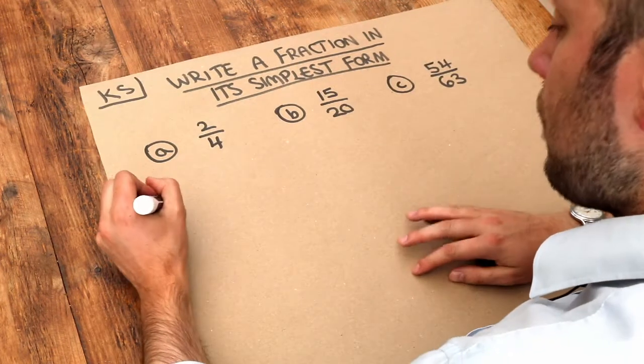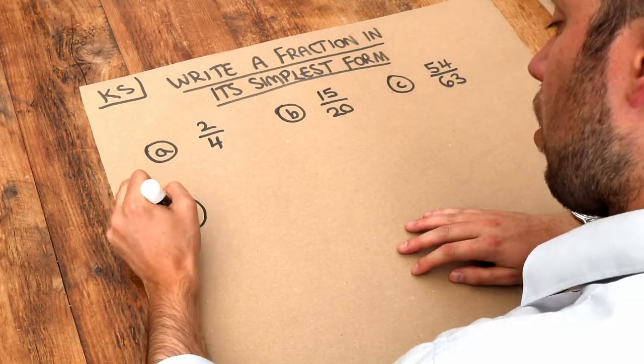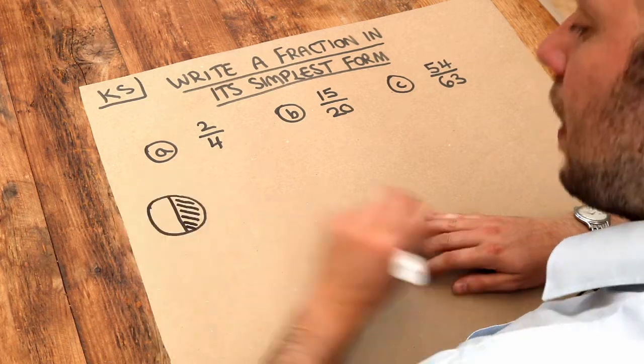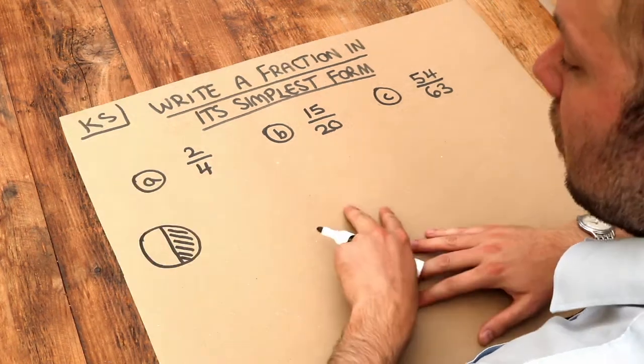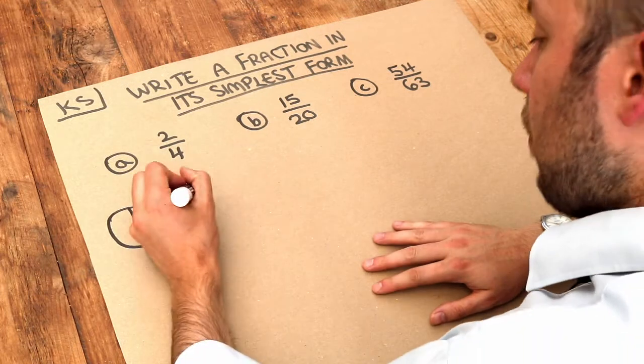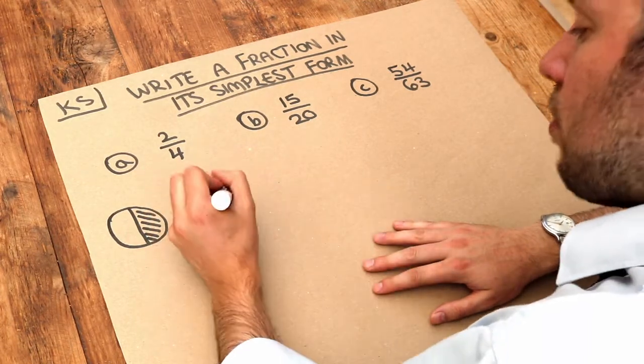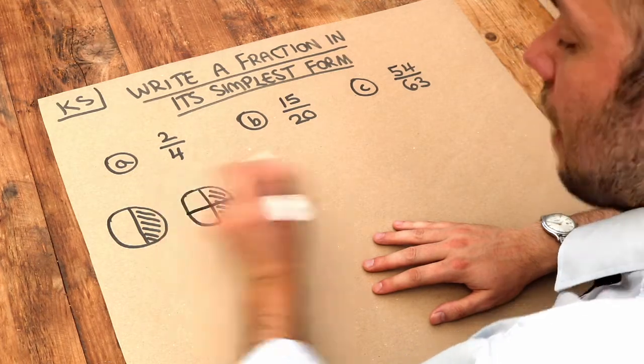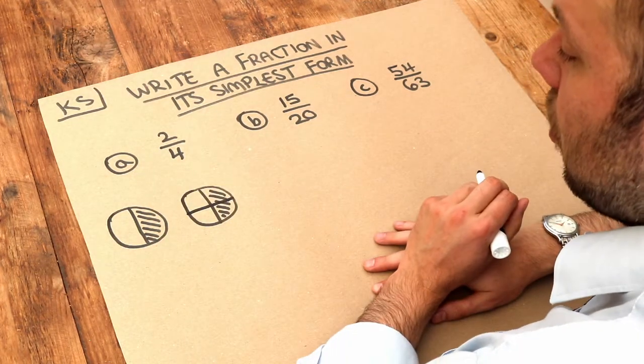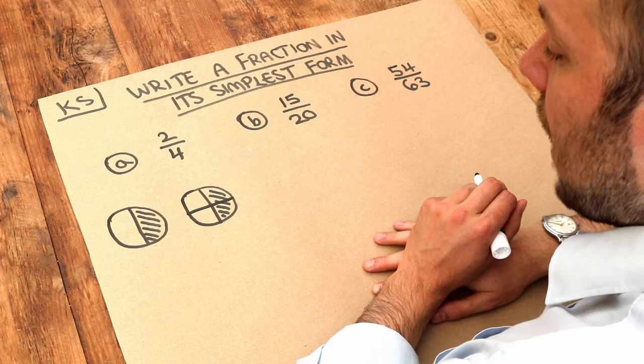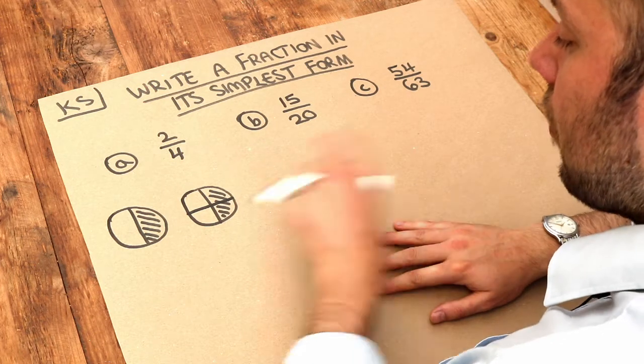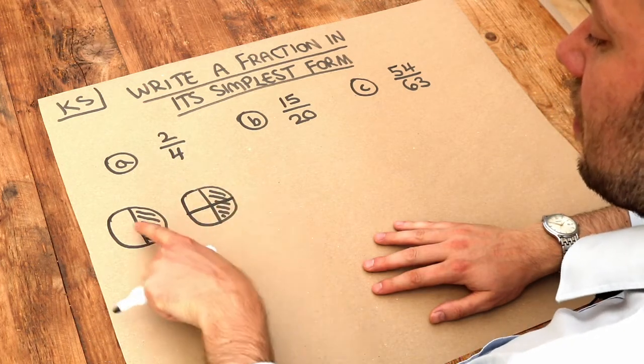For example, if I had say a half of something, so it's split into two and I have one of those halves. If I was to repeat that diagram and split it again like this, I haven't changed what fraction of this diagram I have.